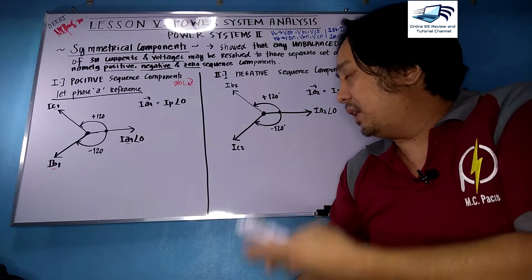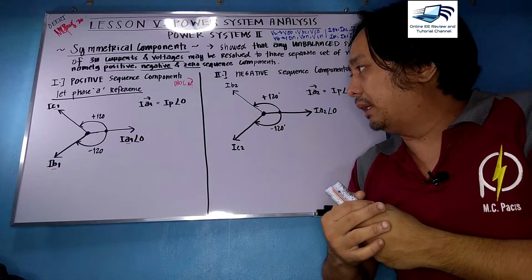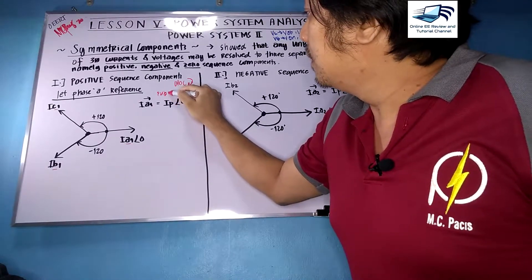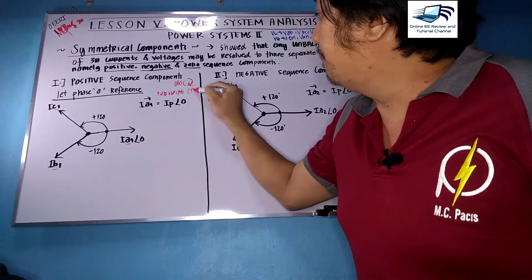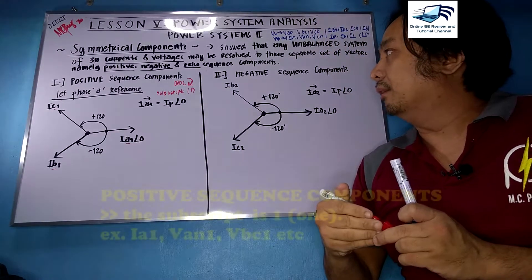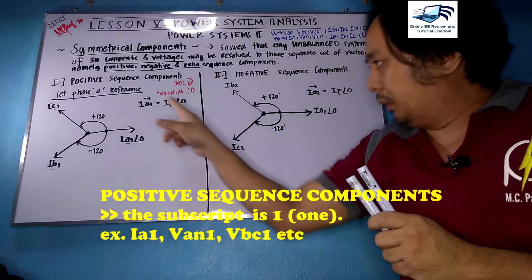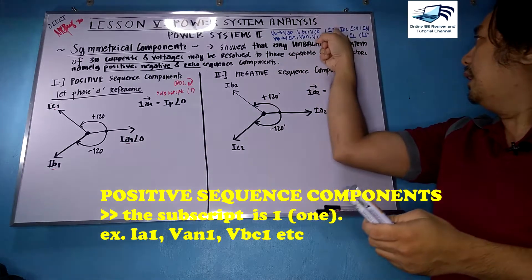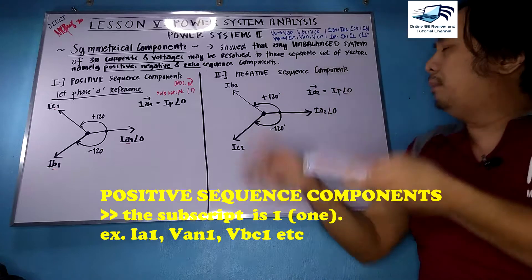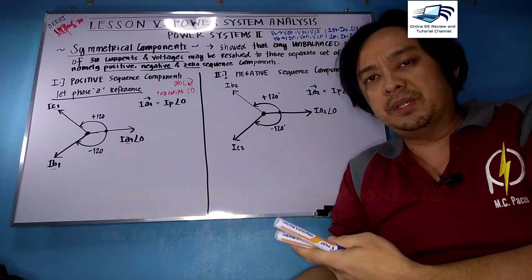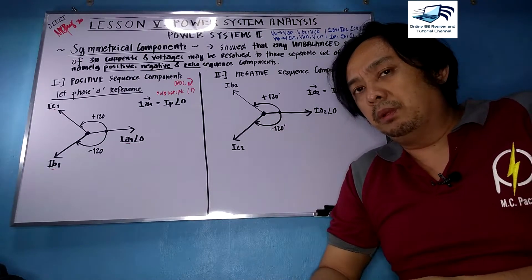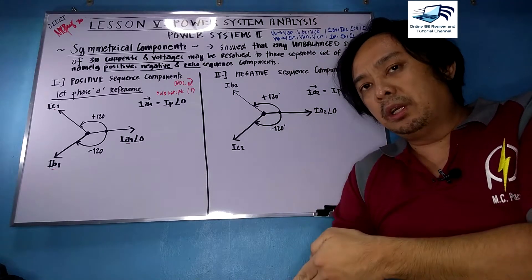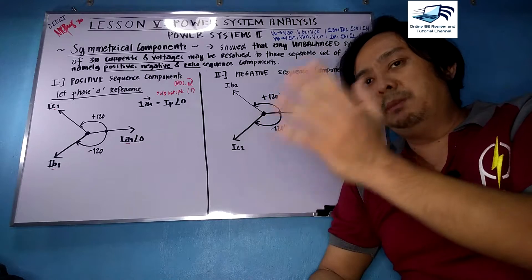The positive sequence component has a subscript of 1. So you can have subscript 1 on those line currents — Ia, Ib, and Ic. You can also represent it by Van, Vbn, Vcn; it is just a representation but the same principle. When we say symmetrical components, it can be voltage or current, and they can be phase or line. They must be in an unbalanced state.